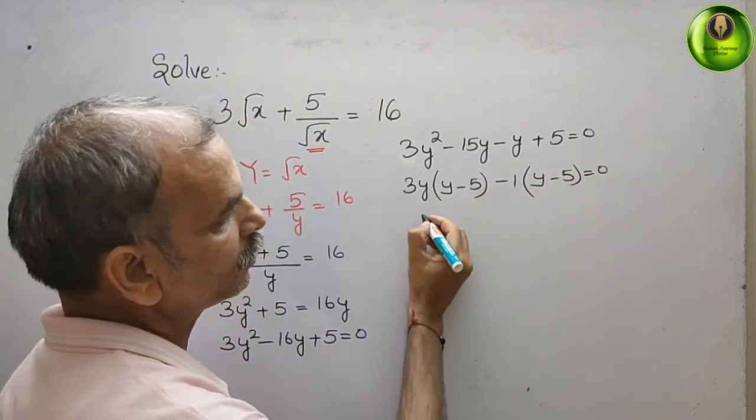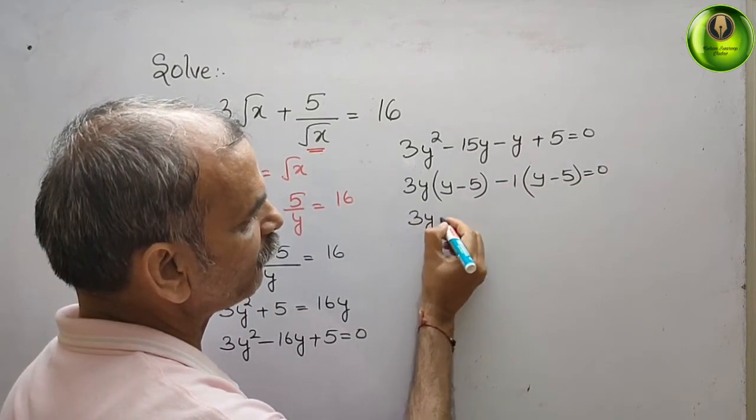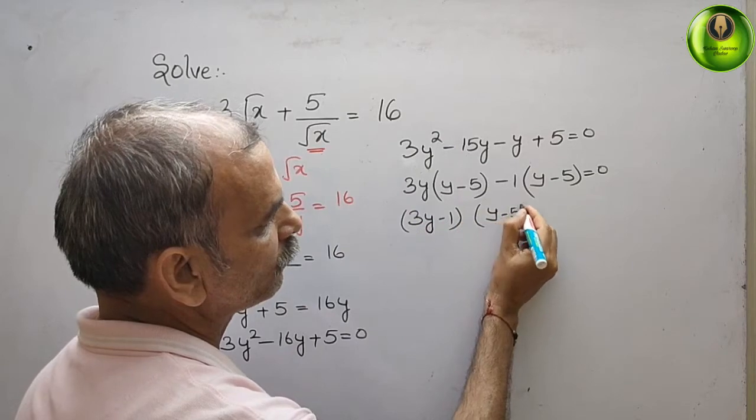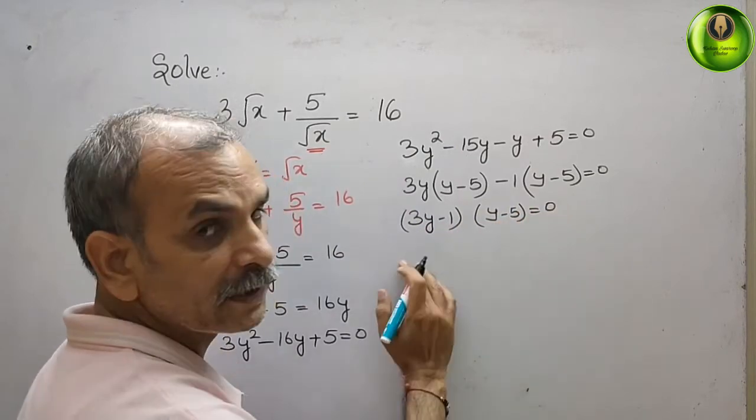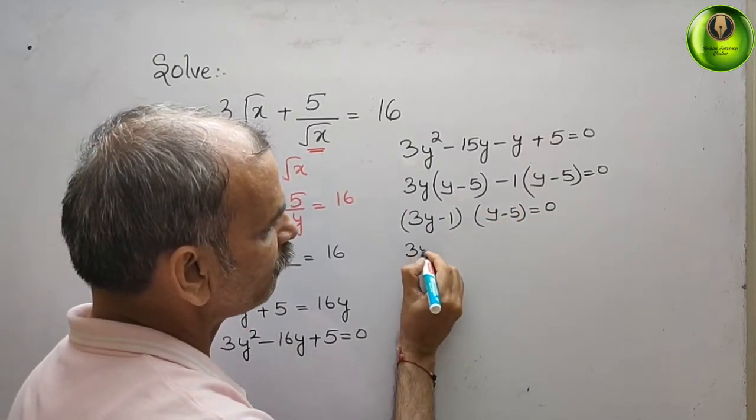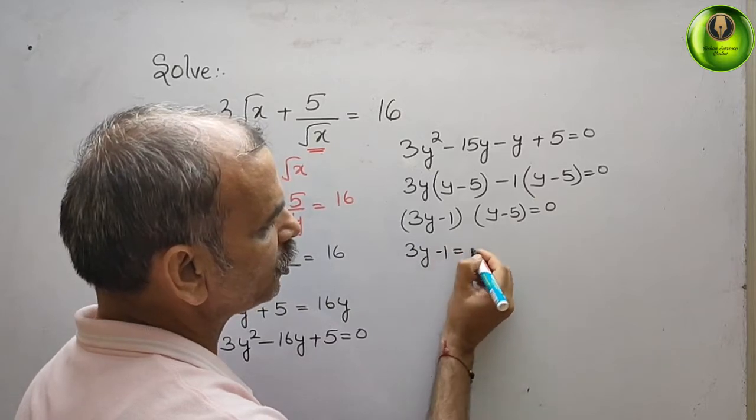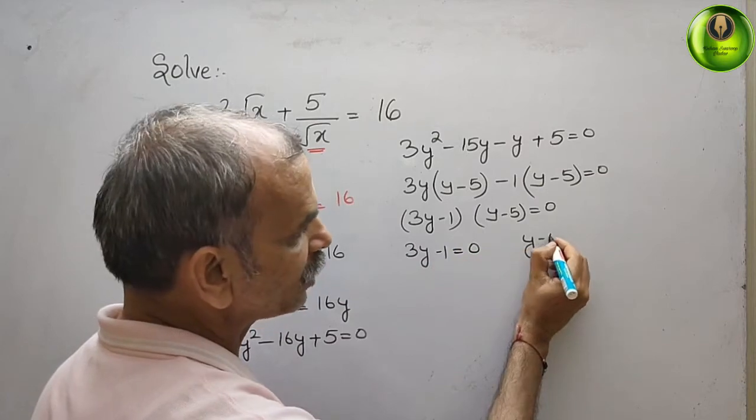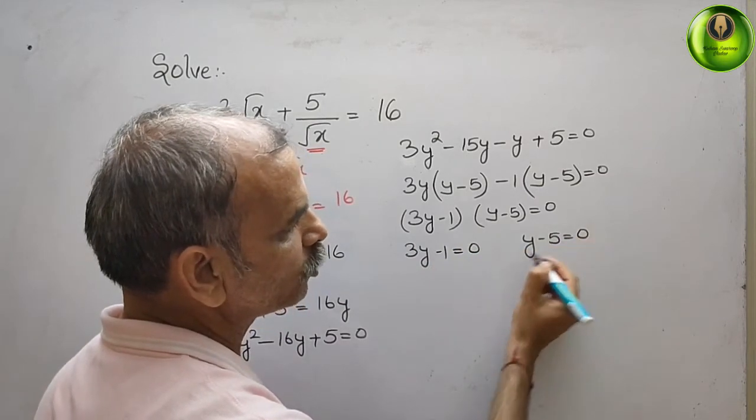So now your two factors are 3y minus 1 and y minus 5. That gives you 0. That means that 3y minus 1 is equal to 0. And you will get y minus 5. That is equal to 0.